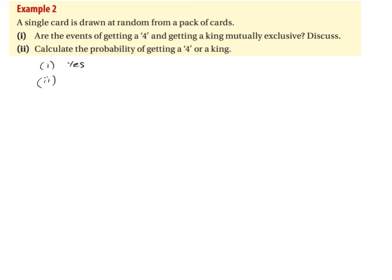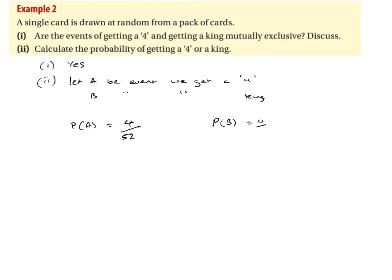We're asked to calculate the probability of getting a four or a king. It's always good practice to define your events. Let A be the event we get a four, and let B be the event we get a king. The probability of A: the favourable outcomes are the four of diamonds, four of hearts, four of clubs, and four of spades — so four outcomes over 52 cards. Likewise, for event B there are four kings, so that's also four over 52.